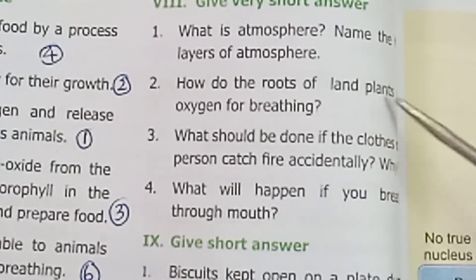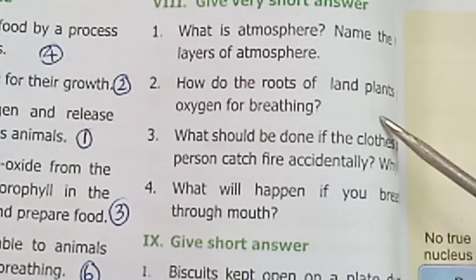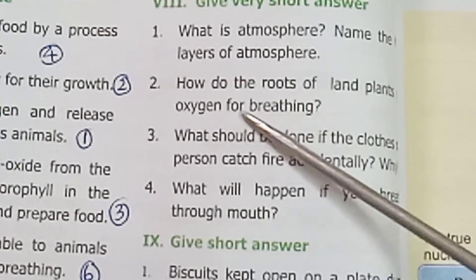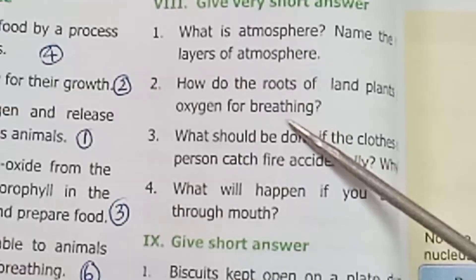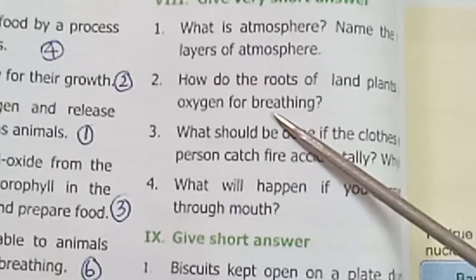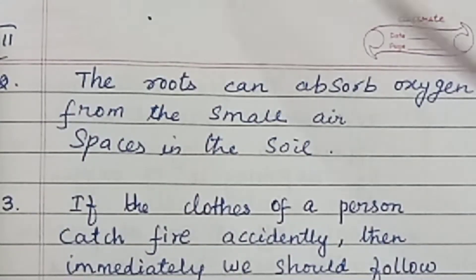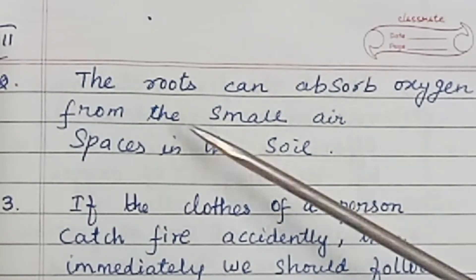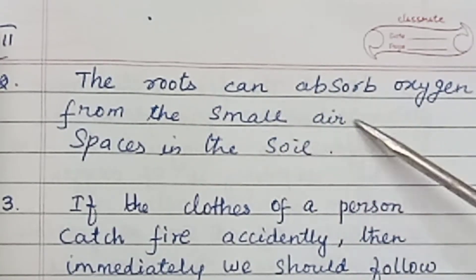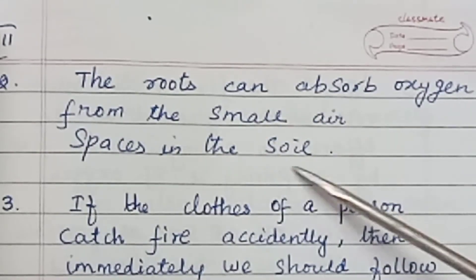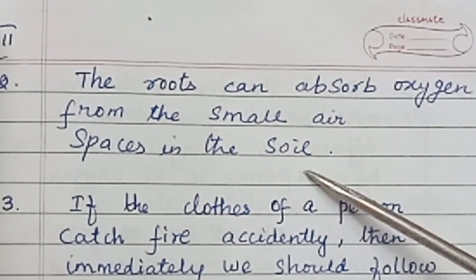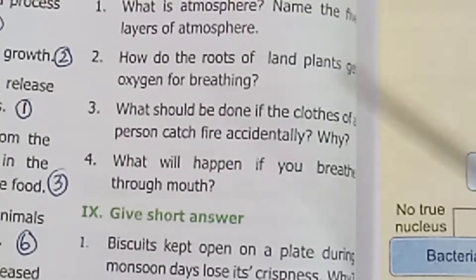Question: how do the roots of land plants get oxygen for breathing? The roots can absorb oxygen from the small air spaces in the soil.